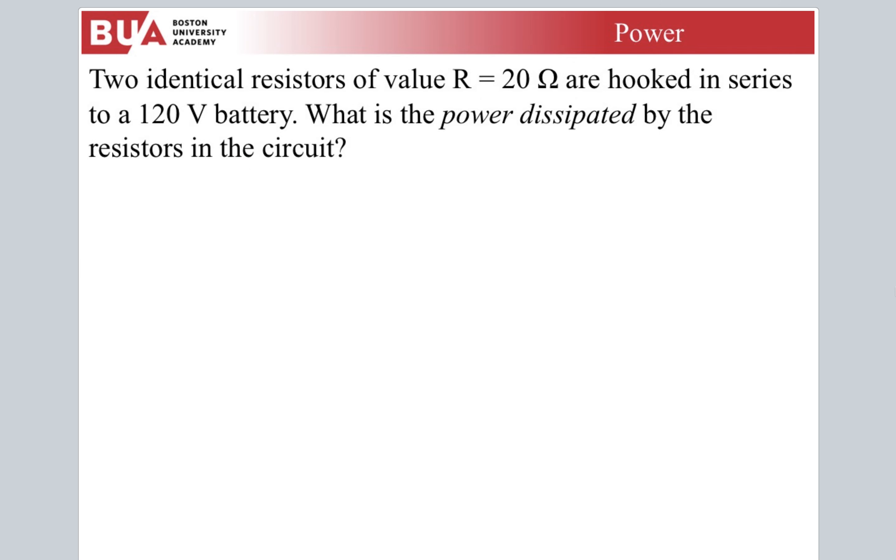Two identical resistors of 20 ohms are hooked in series to a 120 volt battery. What is the power dissipated by the resistors in the circuit? So this is saying what is the power of the circuit. We need to figure out P equals IV. Where's our circuit? 120, 20, 20. First things first, get an equivalent circuit. These are resistors in series. We can just add them. What is the current now? Well, current is V over R equivalent. So 120 divided by 40, three amps in this circuit.